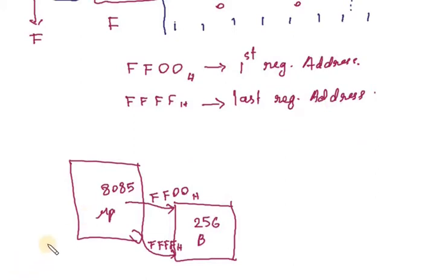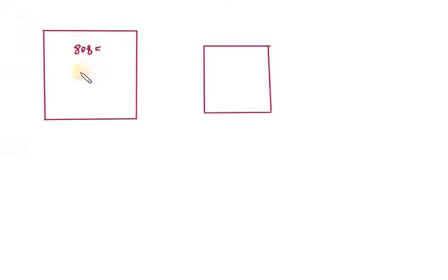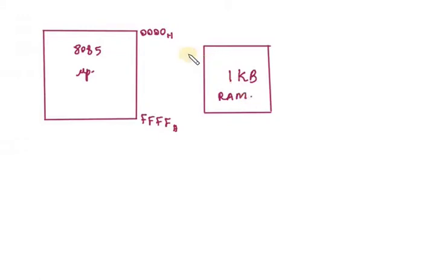Now we can give another example. Suppose we are going to connect a 1 KB memory with this 8085 microprocessor. This is our 8085 microprocessor. The maximum address range is 0000H to FFFFH. We are connecting a 1 KB RAM with this 8085 microprocessor.